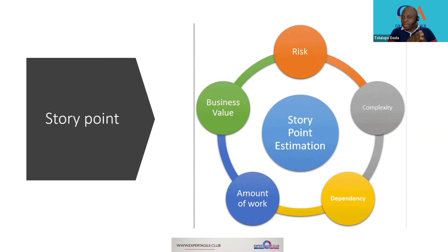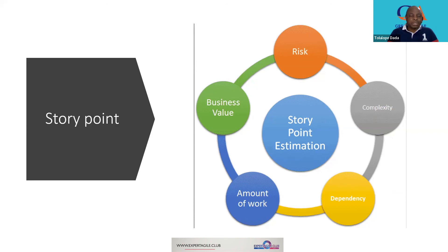When dependency is outside the team, we cannot control it, but within the team we can move things around. If an item depends on something outside to move forward, it automatically becomes high value in the current sprint. The amount of work is also relative — we may start thinking it's a certain amount, but as we explore it more will be needed, which is why assigning fixed hours may not be ideal. Finally, business value — what does the customer want? All of these factors and more are considered in arriving at story points.